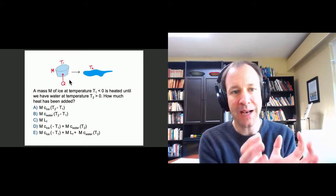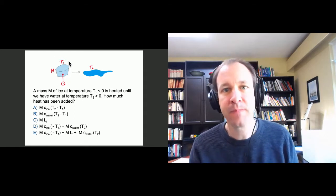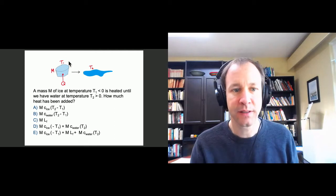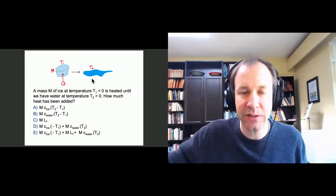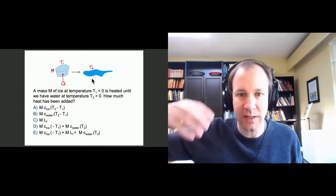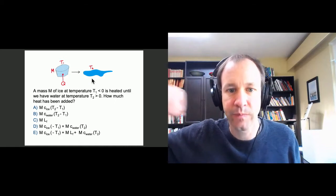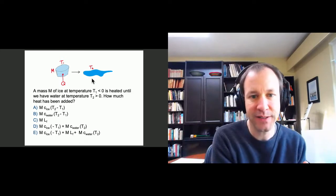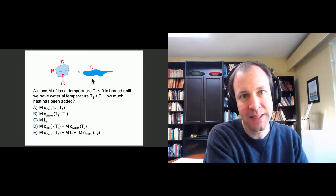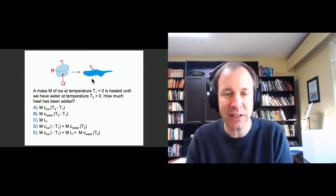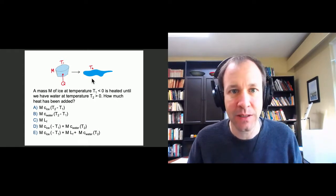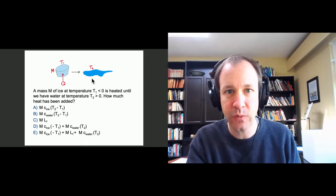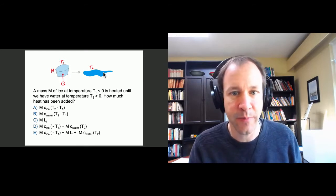Here's a question to consolidate that information. It asks about some ice at initial temperature T1 — maybe minus 10°C, something below zero — and we want to know how much heat is required to heat it up to some temperature T2 which is above zero, so heating the ice, turning it into water, and having that water end up at T2. This kind of problem is part of many more complicated questions: you'll have some part of your system with an initial temperature and phase and a final temperature and phase.